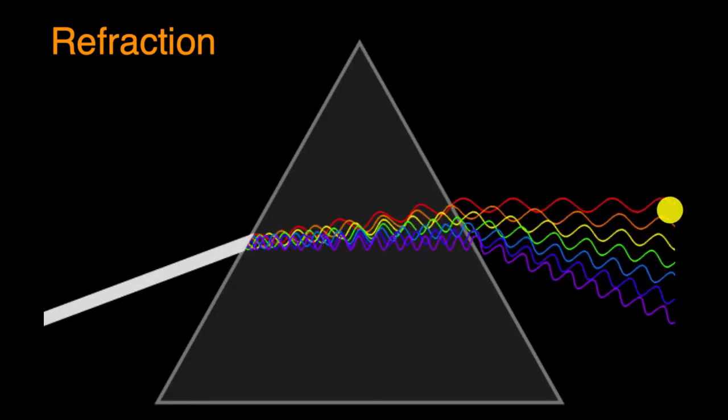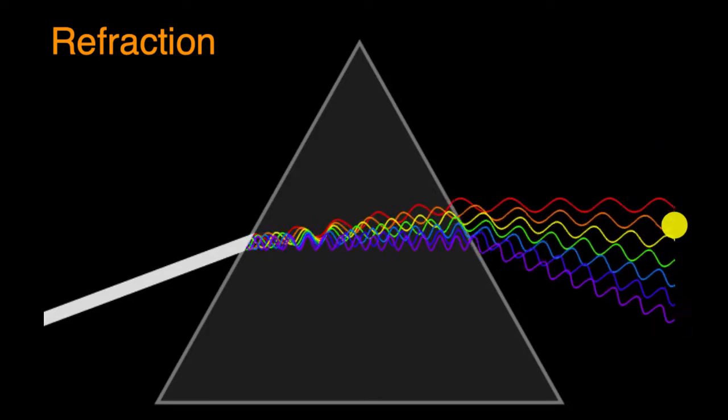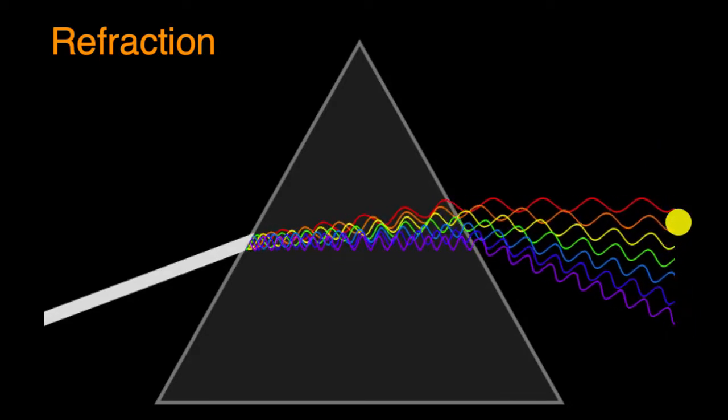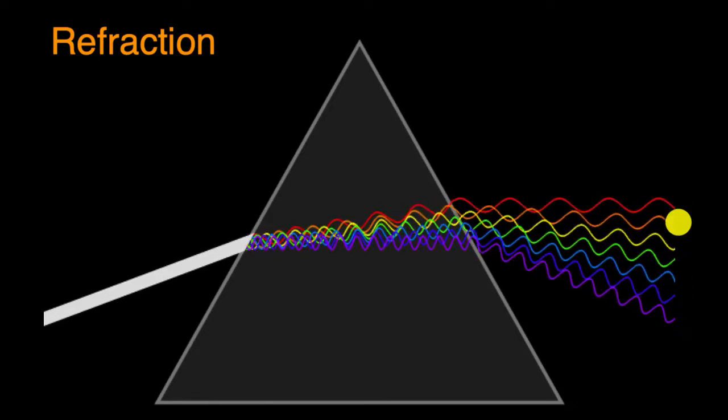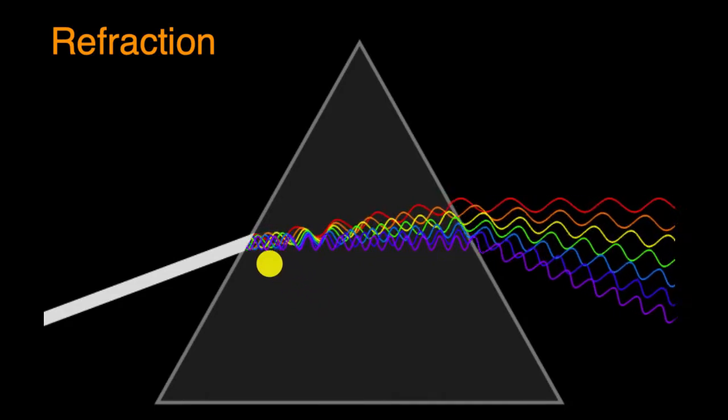And if you were to put a piece of paper here, you would see a rainbow. And that's actually how rainbows are formed. A bunch of water particles in the air refract light exactly like this.